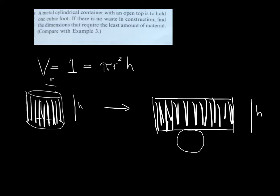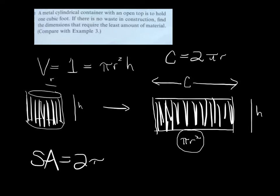The height of the rectangle is the same as the height of the cylinder. The length of the rectangle is the circumference of the circle, which is 2πr. So surface area is 2πrh plus πr².